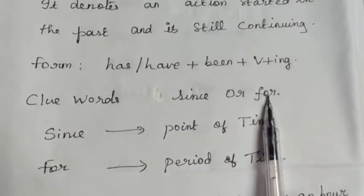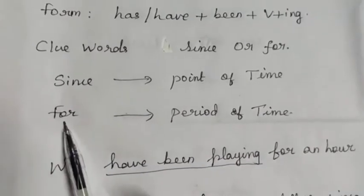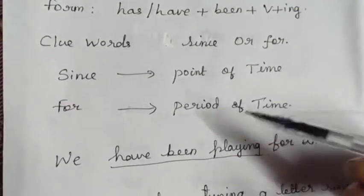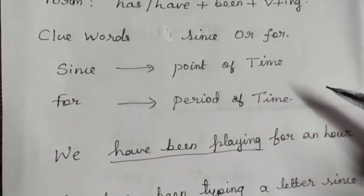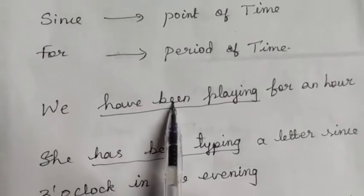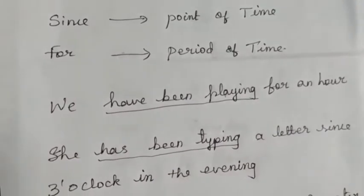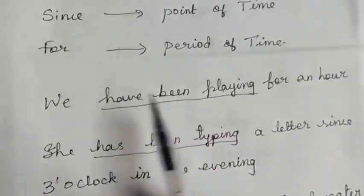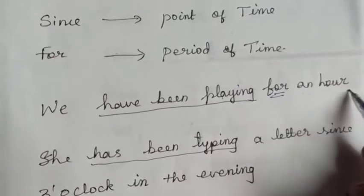'Since' denotes a point of time, and 'for' denotes a period of time. When you see 'since' or 'for' as a time indicator, you use present perfect continuous tense. Example: 'We have been playing for an hour.' Here, 'we' is plural so we use 'have', plus been, plus verb plus -ing: 'have been playing'.